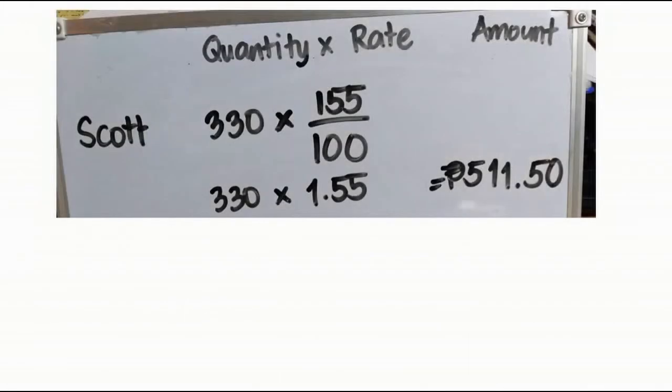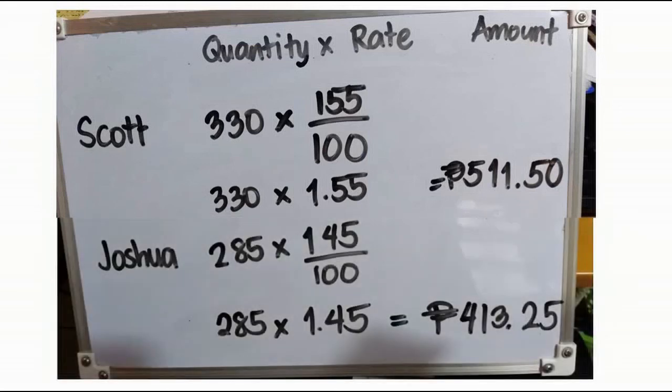Scott: 330 multiplied by 155 divided by 100, so we will have 330 multiplied by 1.55, which is 511.50. Joshua: 285 multiplied by 145 divided by 100, that is 285 multiplied by 1.45, so Joshua will have 413 pesos and 25 centavos.